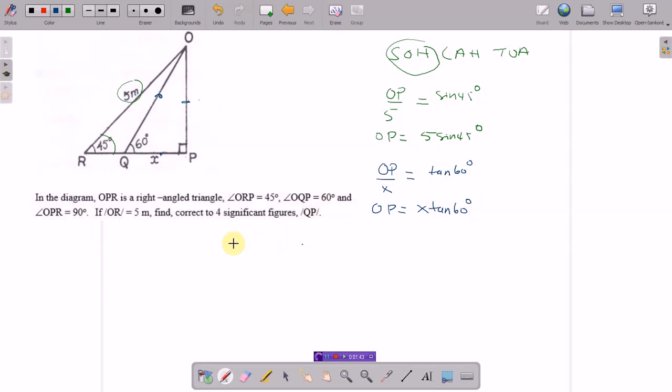If I equate them, I will have 5 sine 45 is equal to X tan 60 degrees. If I divide both by tan 60, I'm left with X, because if you divide tan 60 by tan 60 you get 1. 5 sine 45 divided by tan 60 degrees.